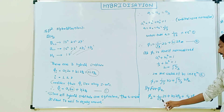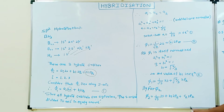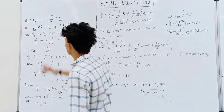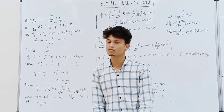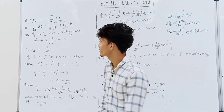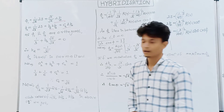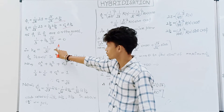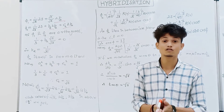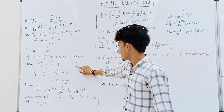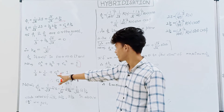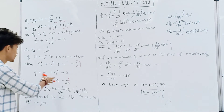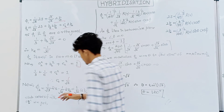For phi2, which lies in the xz plane, we cannot neglect the px value. So phi2 = (1/√3)·2s + B2·2pz + C2·2px. Our job is to calculate the values of B2 and C2. Applying the second condition — phi1 and phi2 are orthogonal to each other — by calculating the value of B2 we get minus 1 upon root 6. Applying the third condition, that phi2 is itself normalized, and substituting the values of A2 and B2, we get C2 equal to 1 upon root 2.